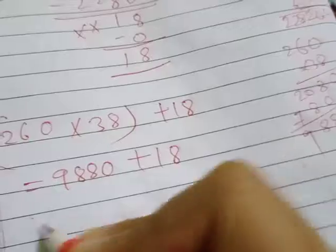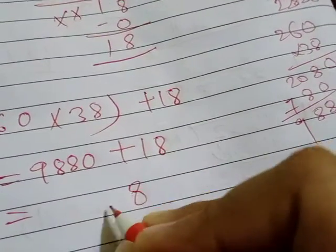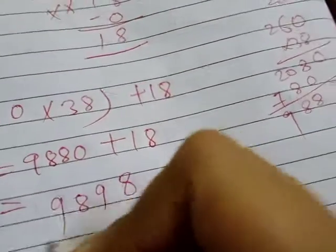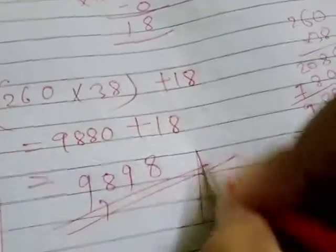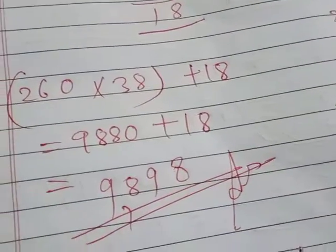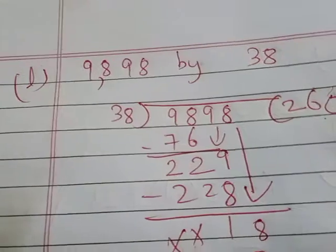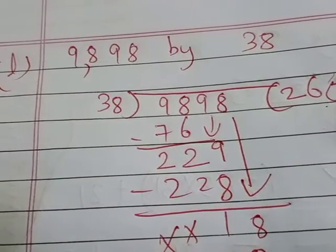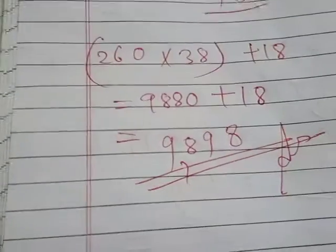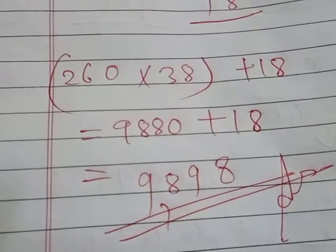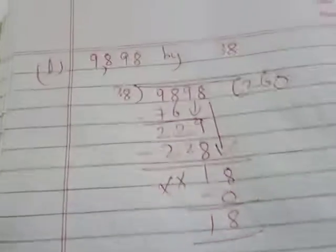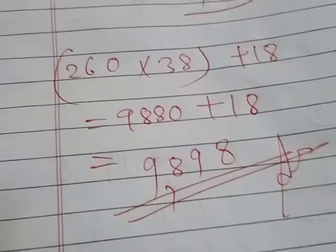Plus 18: 8 plus 1 is 9, and we get 9898 in our checking. 9898 is also our dividend. When the dividend and the number in our answer are the same, our solution is correct.